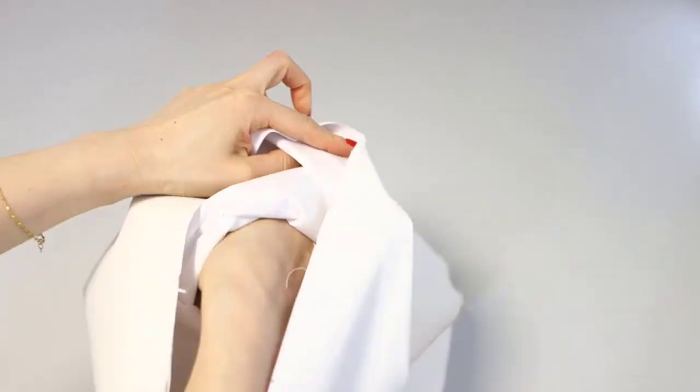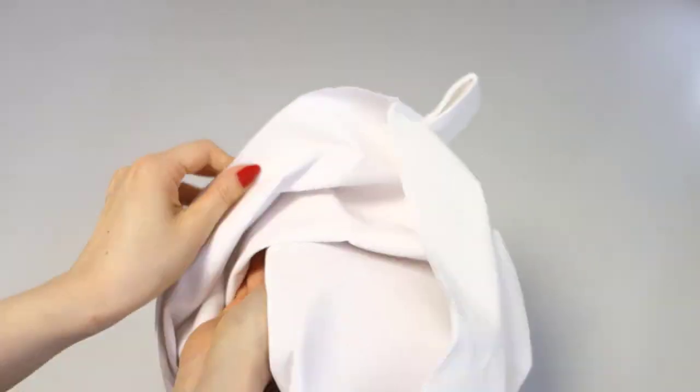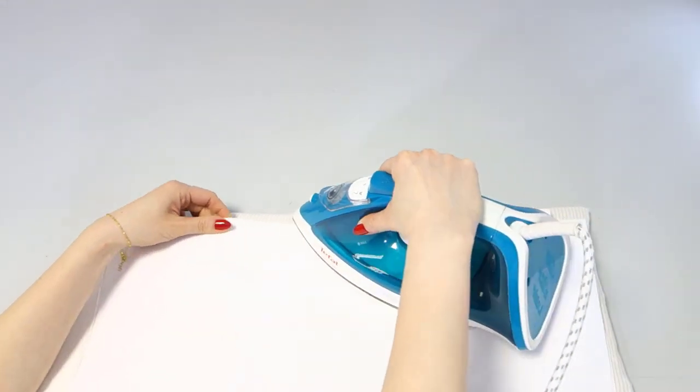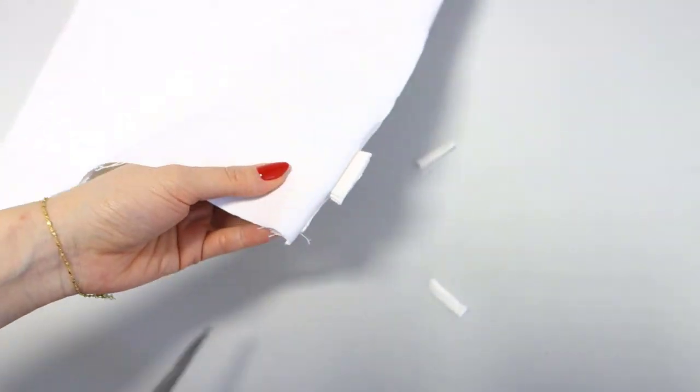Turn the wrong side out to press the seam again. Make sure to press it flat so that the seam allowance comes out. Once again, be careful not to damage the applique with your iron. Cut the excess of the side tab to 0.5 cm or a quarter of an inch.